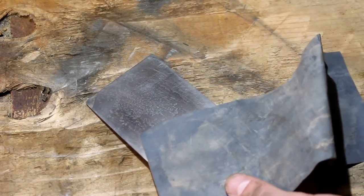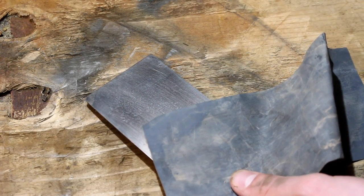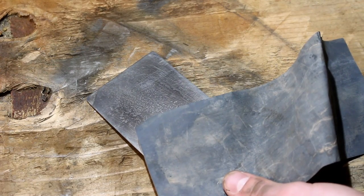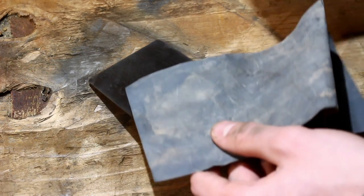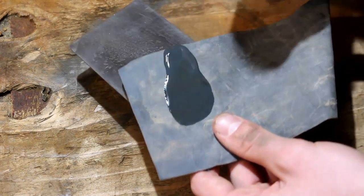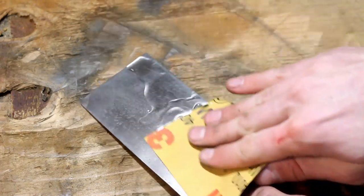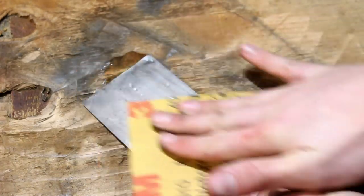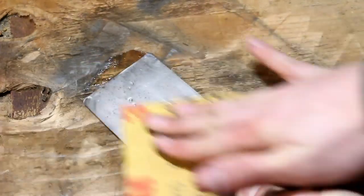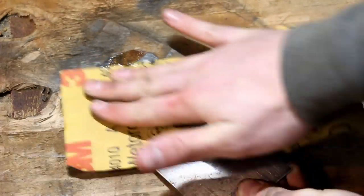Then we're going to jump directly over to our thousand grit. And because my sandpaper is already a little bit clogged, I'm just going to dump a little bit of rubbing alcohol on it and then just go over it. This is a wet and dry sandpaper, so it's not going to ruin the sandpaper.